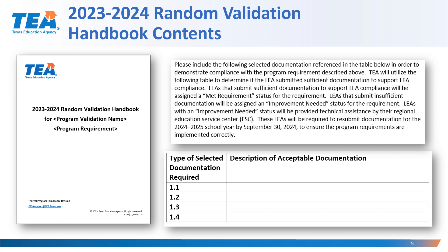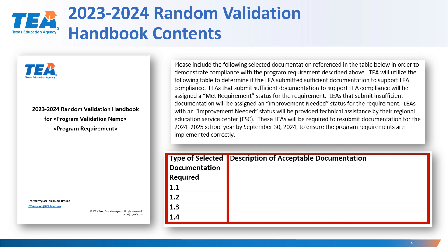The table below shows an example of what it will look like. Each type of selected documentation that is required will have a number, as well as the name of the required documentation, and a description of the acceptable documentation that will provide additional details related to the documentation that has been requested.